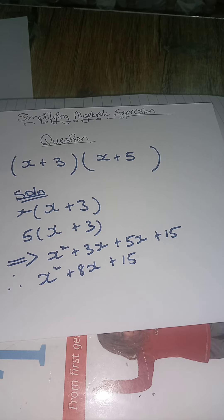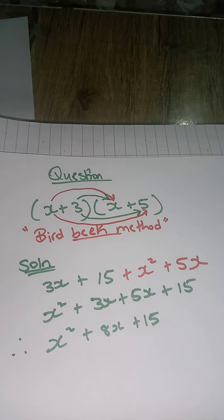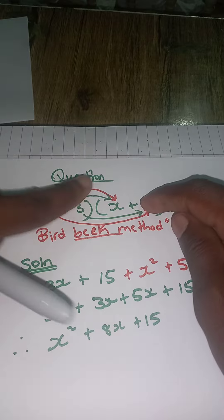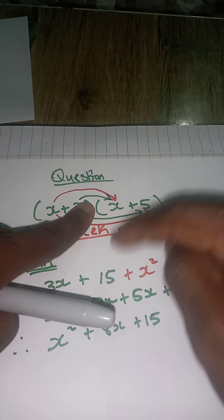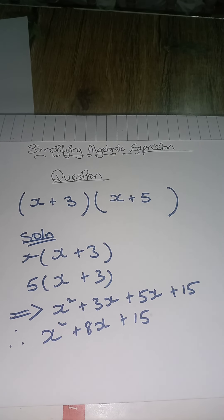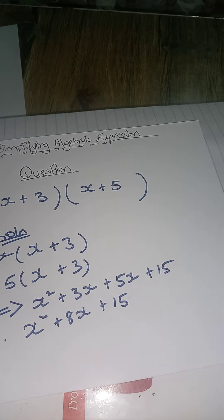So those are two methods I've shown you thus far. The bird beak method is where you cover one of them, multiply, then cover the next and multiply. Or you can use the two bracket method. The reason why I'm showing you a variety of methods is so that you choose which one you're more comfortable with. The last method I'm going to show you I call the multiplication method.